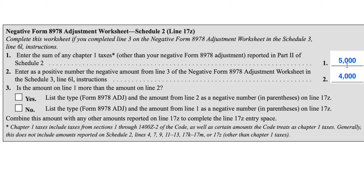In Line 1, we're going to enter the sum of Chapter 1 taxes other than your Form 8978 Adjustment as reported in Part 2 of Schedule 2. Bear with me for a few moments because there's not a whole lot of strict guidance on what Chapter 1 taxes look like. We're going to make a determination of what the IRS instructions say is not included as Chapter 1 taxes, and then infer that the rest of them must be Chapter 1 taxes.